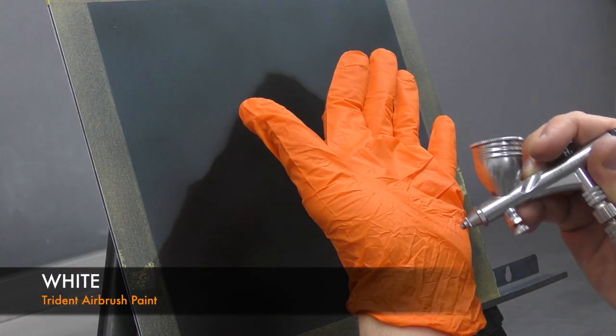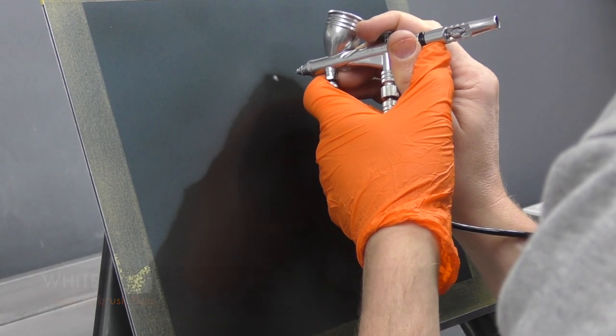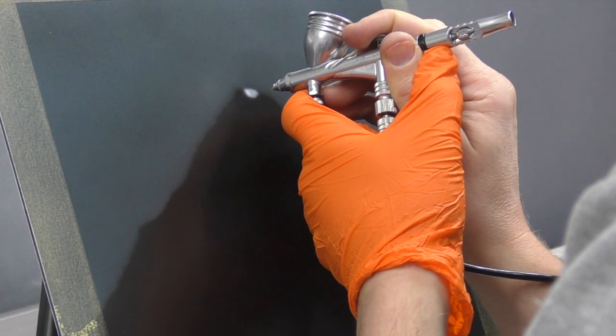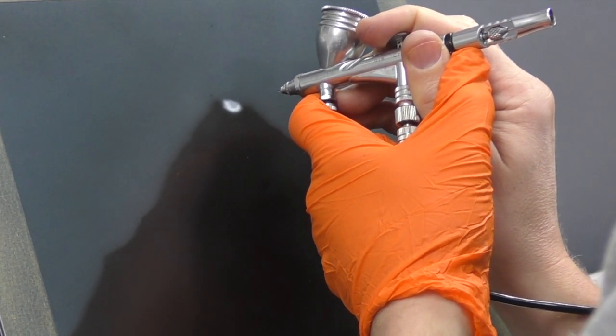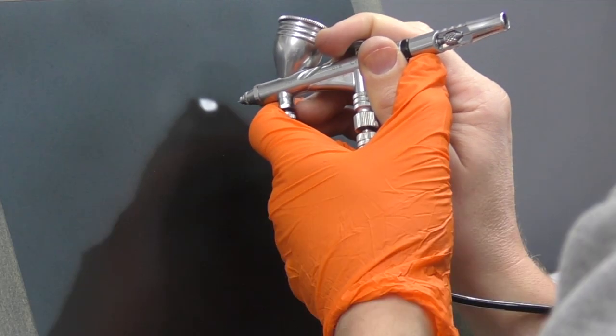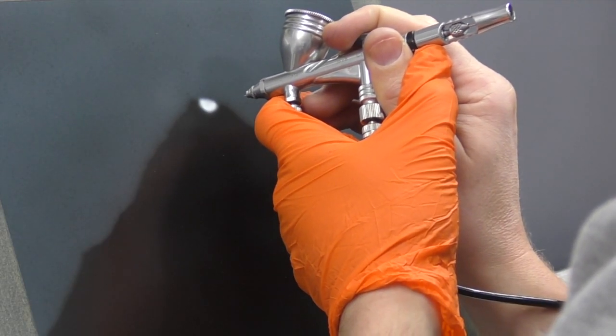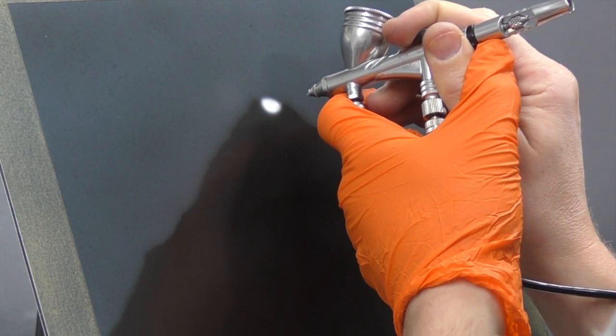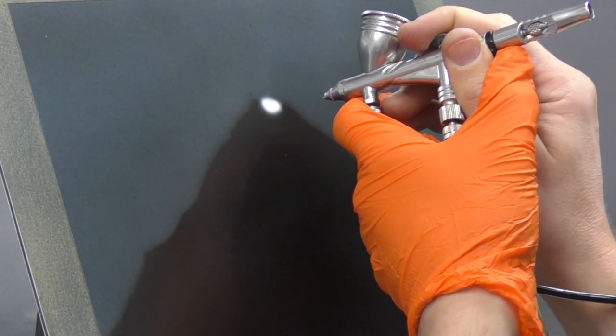Okay so now I've allowed that to dry I'm going to remove my paper template revealing my volcano and using white I'm going to start to airbrush in the lava. So for this I just grabbed a reference off Google that you can definitely follow along and create your own version of this, it doesn't have to be exactly the same.